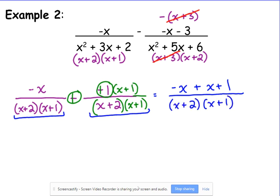No, you cannot cancel those x plus 1's because you're adding the 1 in the numerator. Negative x plus x cancels. So we are left with 1 over x plus 2 times x plus 1.